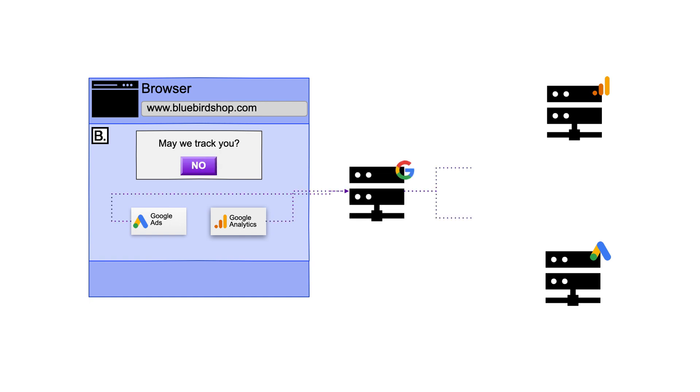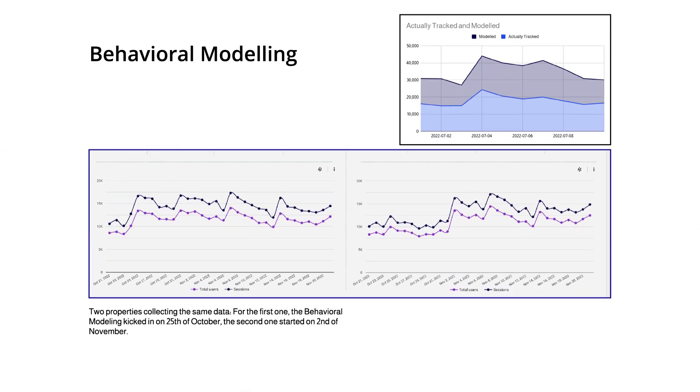That's why Google has created a new technique called Consent Mode. If a user is not giving their consent, Google sends basic anonymous pings to a third server — similar to the basic information that every web server collects when somebody uses a website. Along with the data that was consented, these signals are used in machine learning algorithms that model the behavior of users that denied their consent, meaning Google fills the gap by estimating the data of people who have not given consent.